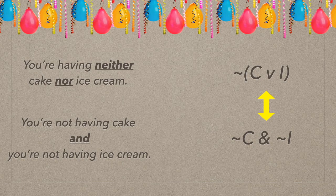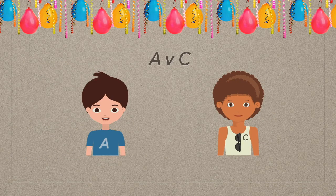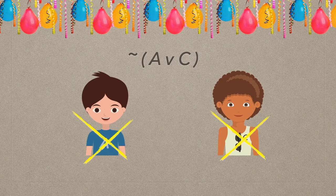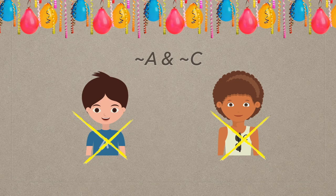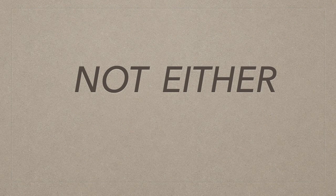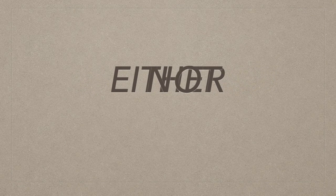Quick example: is either Alex or Carla going to the party? No — not either of them. That is, neither of them is going, which is logically the same as saying Alex is not going and Carla is not going. They're both not going. So that's the neither or not either form, which is very different from either not.